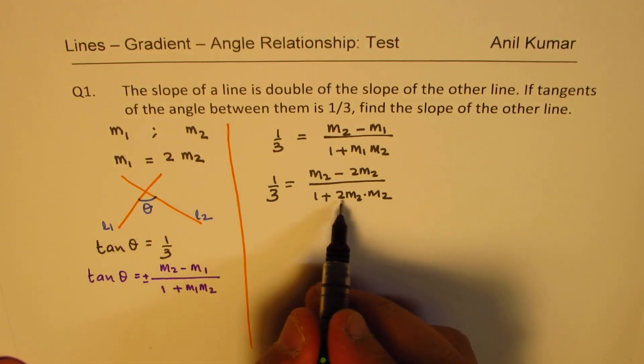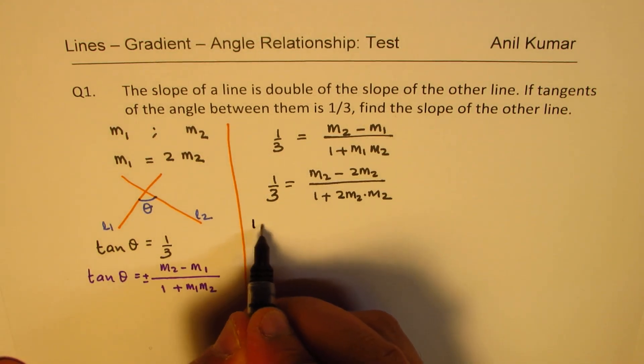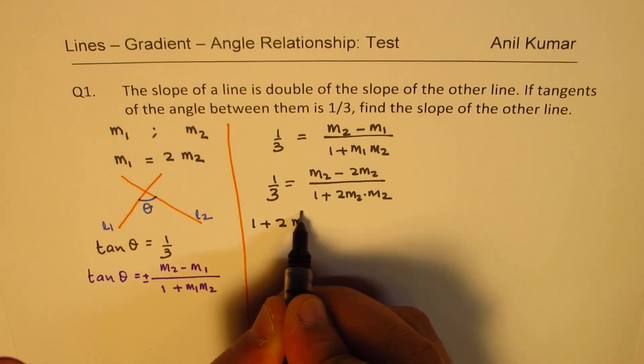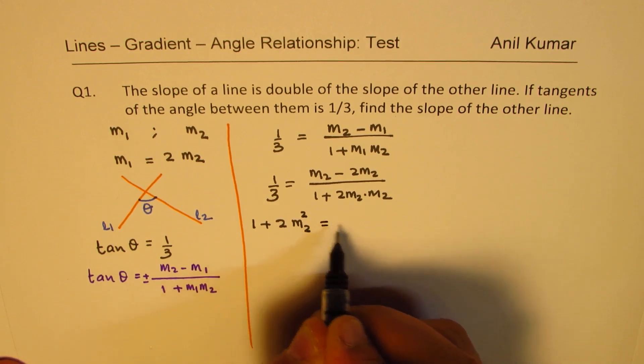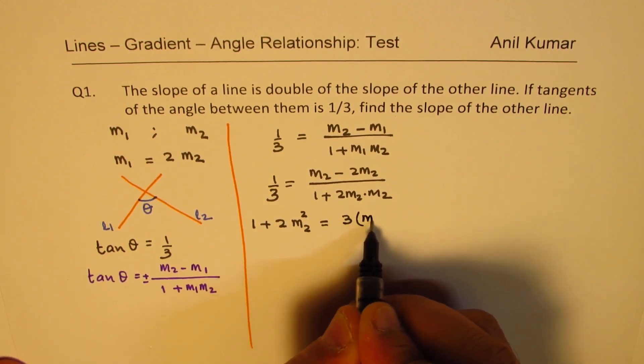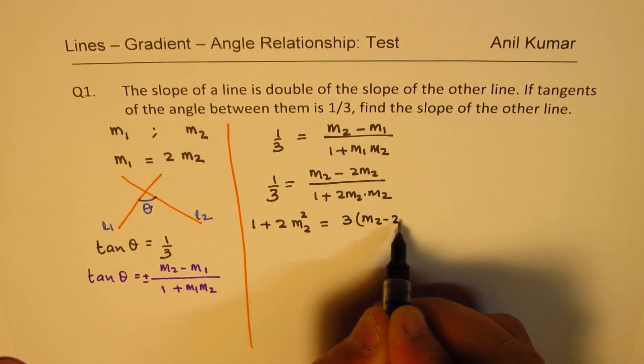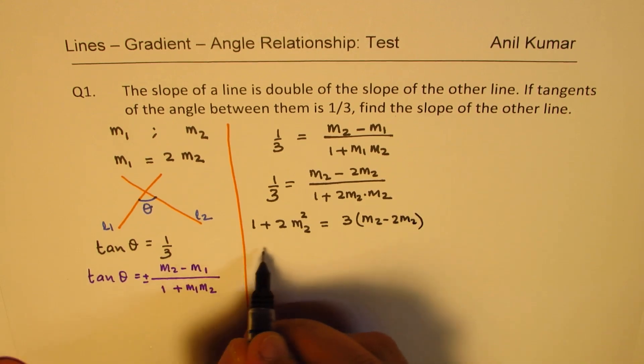Now, we can cross multiply, so bringing it here, we get 1 plus 2 times m2 square equals to 3 times m2 minus 2 m2.